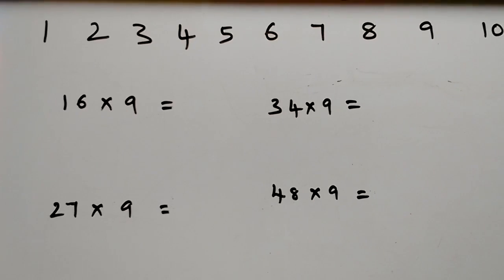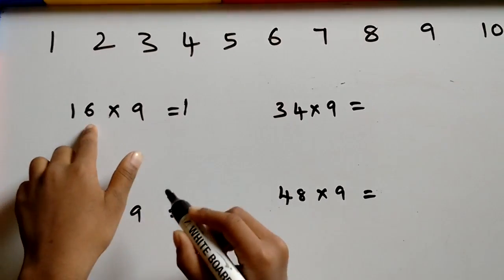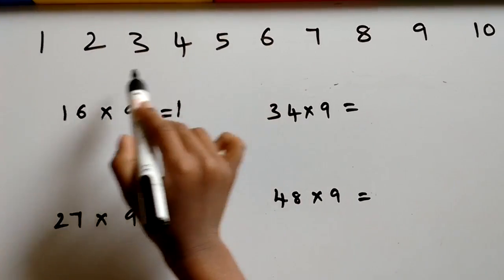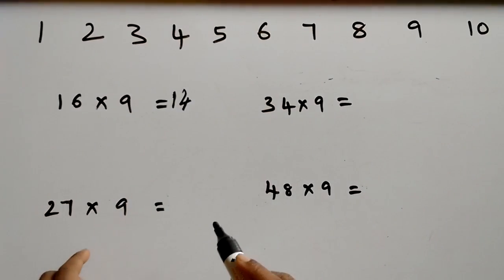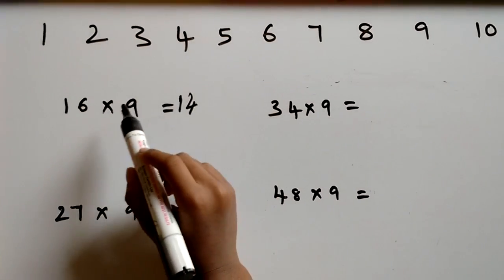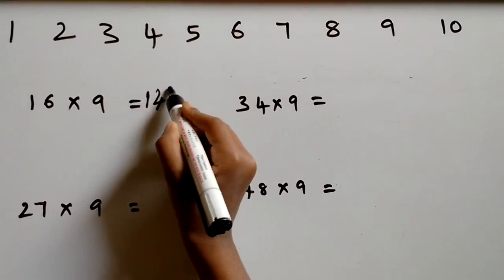16 nines are. First write 1. Between 1 and 6 there are 4 numbers. So write 4. After 6 there are 4 numbers. So write 4.